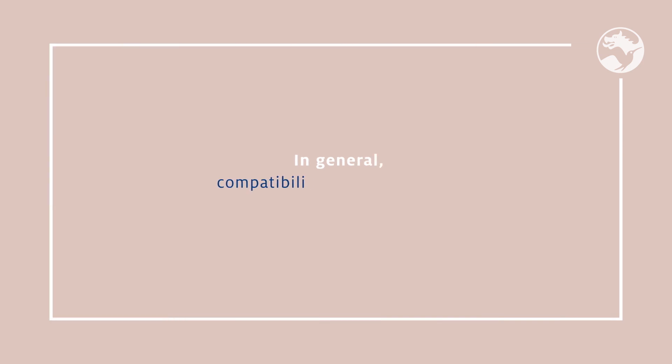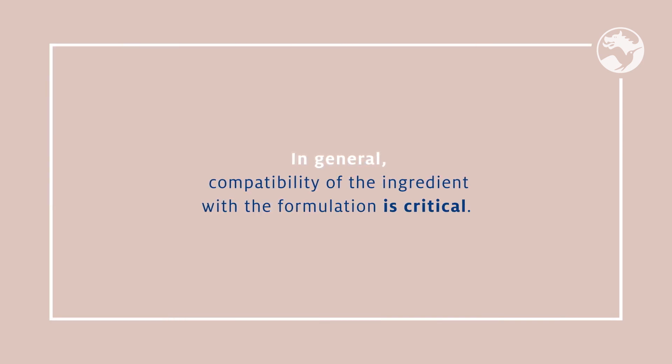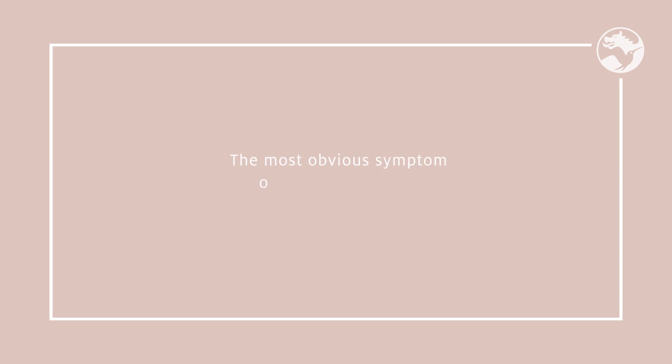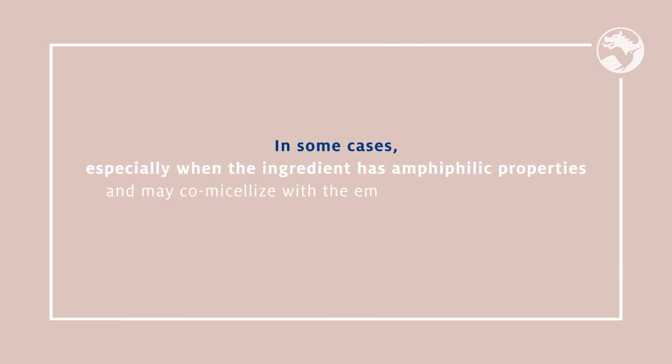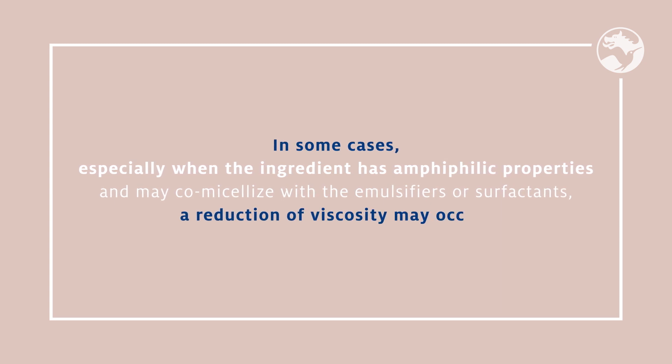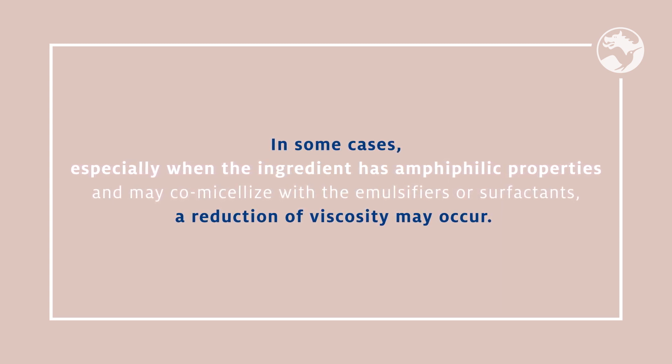In general, compatibility of the ingredient with the formulation is critical. The most obvious symptom of incompatibility is phase separation. For example, phenolic compounds are known to be inactivated by non-ionic emulsifiers such as polysorbate, while the effectiveness of phenoxyethanol may be reduced by cellulose derivatives. In some cases, especially when the ingredient has amphiphilic properties and may co-micellize with emulsifiers or surfactants, a reduction of viscosity may occur. In such cases, adequate compensation with a thickener might be necessary.